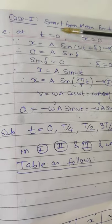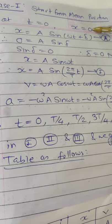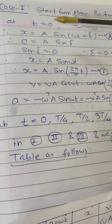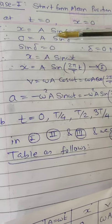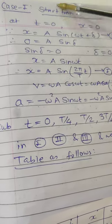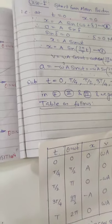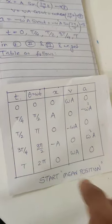This is the way you can simplify things. If it is right extreme case 2, then at t equal to 0, x equal to +A. Therefore A equal to A sin δ, so sin δ will be 1, δ will be π/2. This I have done.